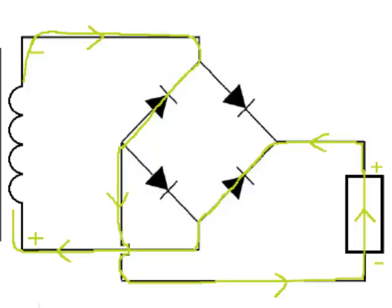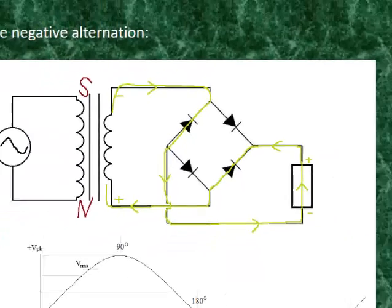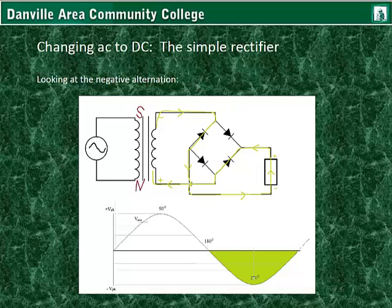These are often called power supplies or power adapters. Some of the power supplies for gaming systems or multimedia speakers seem heavy — that's because the transformer has an iron core, and that's what causes this mutual inductance and a decrease in voltage, so that iron core is heavy.